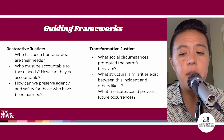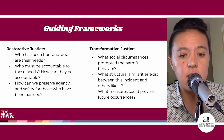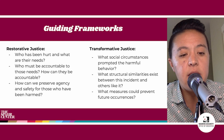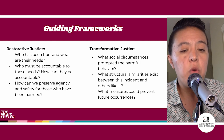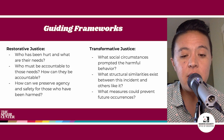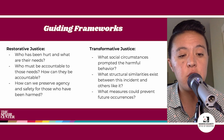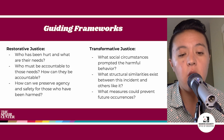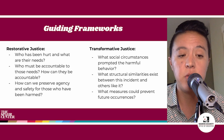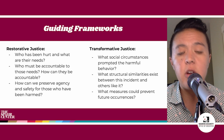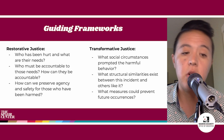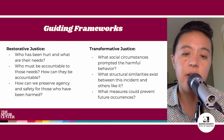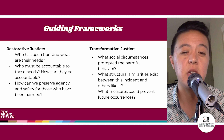Transformative justice is especially useful for setting values and addressing systemic issues in community change. We can look at these types of justice through questions on the slide. Looking at a harmful situation restoratively, we ask: Who has been hurt and what are their needs? Who must be accountable to those needs? How can they be accountable? And how can we preserve agency and safety for those who have been harmed? The biggest point about restorative justice for me is the accountability part. Just acknowledging who has been hurt and how is not enough — there needs to be a system of accountability that can truly repair harm instead of just acknowledging it.